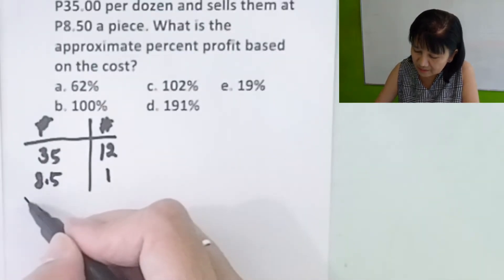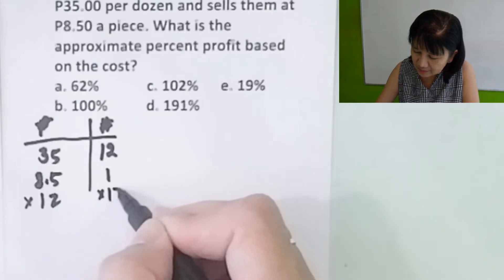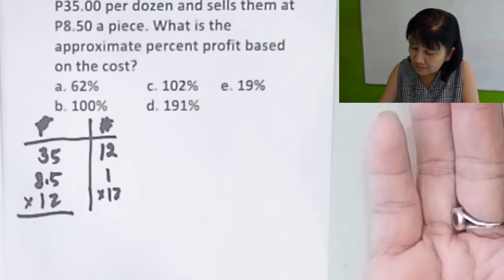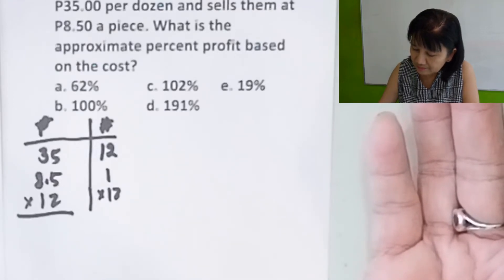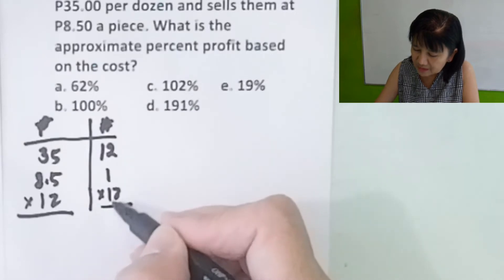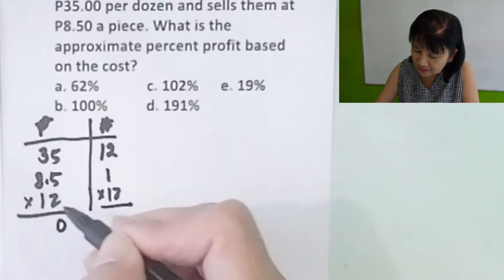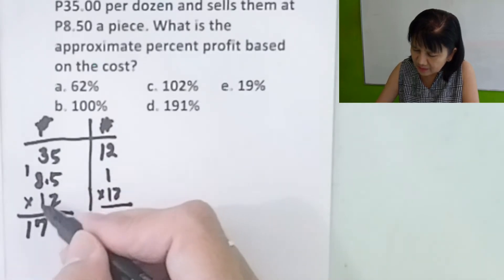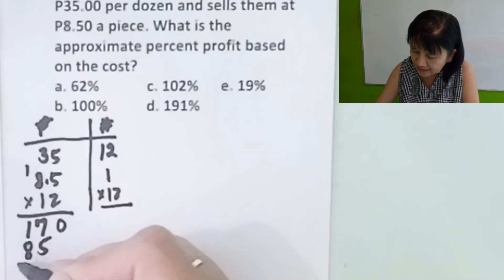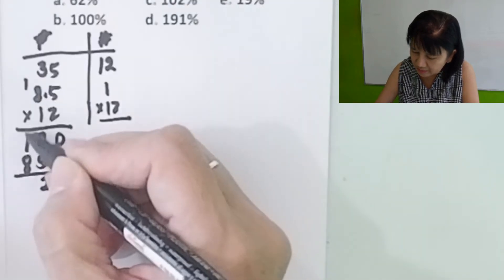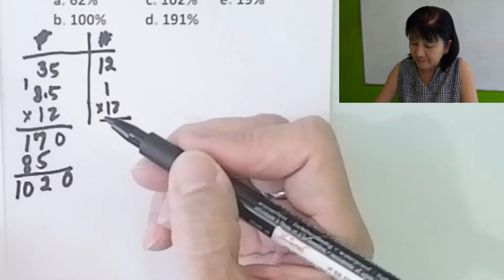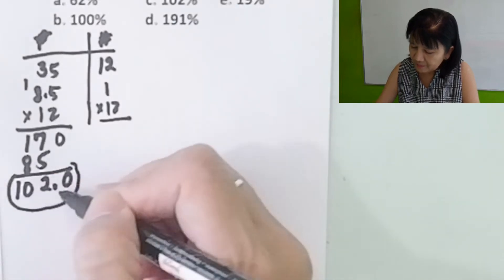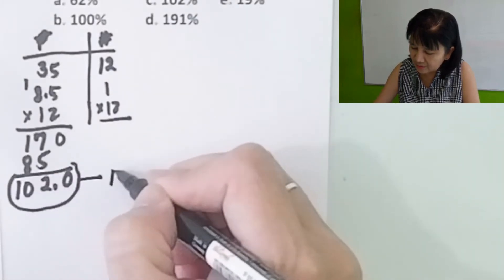The price is 35 pesos per dozen, meaning 12 pieces, and sells them at 8.50 per piece. We multiply 8.50 by 12 to find the total selling price for one dozen. 8.50 times 12 equals 102. This is the selling price for 12 pieces.